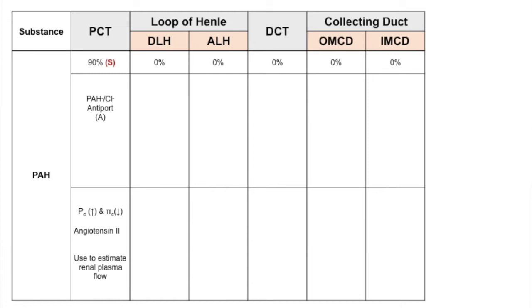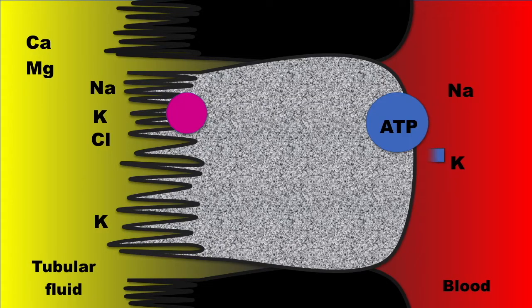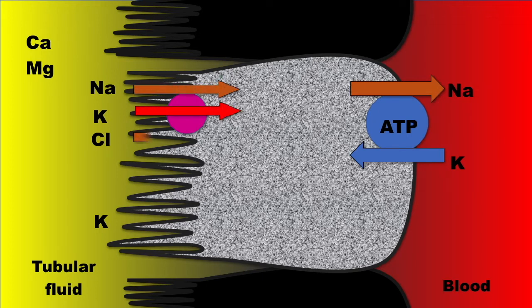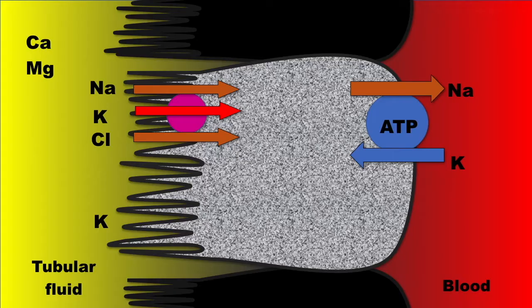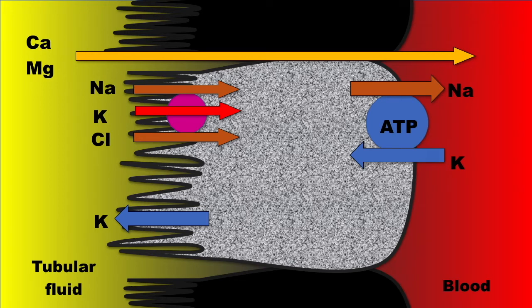However, estimated renal plasma flow underestimates true renal plasma flow by 10%. In the thick ascending limb, movement of sodium across the luminal membrane is mediated primarily by the 1-sodium-2-chloride-potassium co-transporter, through secondary active transport. There is a back-leak of potassium into the lumen, creating a positive charge, which forces magnesium and calcium to diffuse paracellularly.